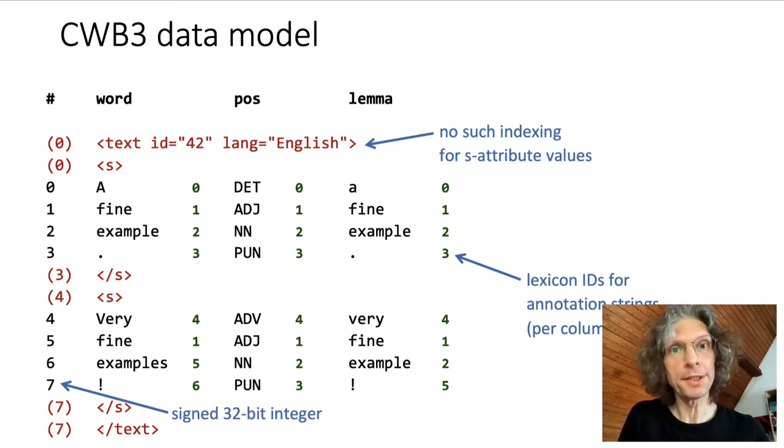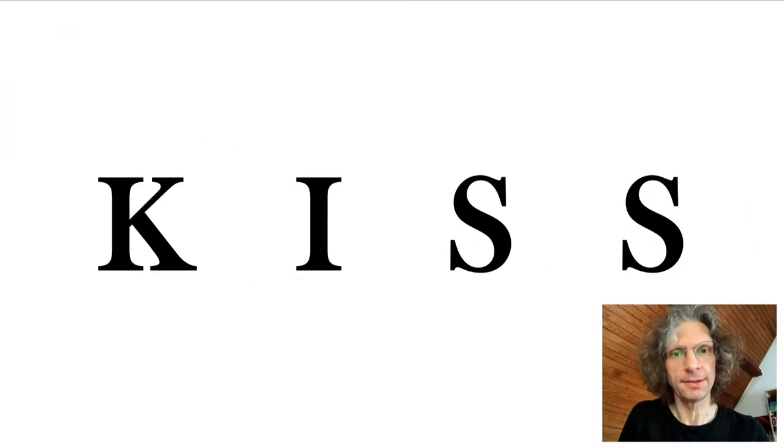When Andrew and I started designing the new data model for Ziggurat, we quickly agreed on one fundamental principle – KISS. Keep it simple, stupid. So we wanted to preserve as much as possible of the successful tabular data model of CWB3, but extend it in such a way that it becomes more flexible and scales to much larger corpora.